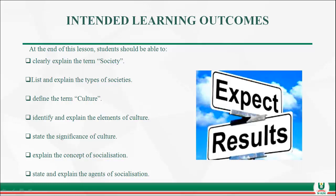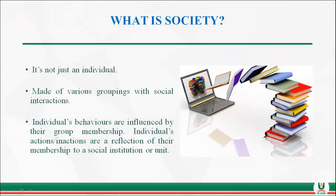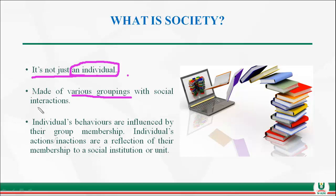Let's look into the term society. Society has been defined by many persons. In summary, it is not made up of just one individual. Society comprises many individuals. It is made up of different groups with social interaction. There are different groups that interact amongst themselves, and individuals' behaviors are influenced by their group membership. Their actions are a reflection of their membership, and people behave according to the doctrines of the group they belong to.